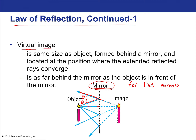A ray hitting the mirror exactly along the normal direction reflects back anti-parallel to itself — zero degrees equals zero degrees. By tracing multiple rays (with different angles theta_1 and theta_2, each obeying the law of reflection) and extending virtual rays behind the mirror, we pinpoint exactly where the virtual image forms. For a flat mirror this is straightforward; for curved mirrors it's more complex, so getting comfortable with ray diagrams now is important.